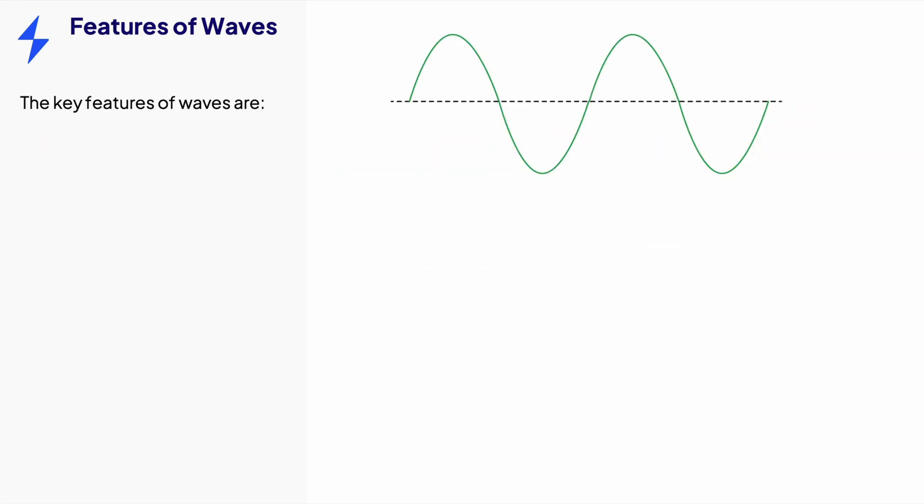The key features of a wave are best shown on a transverse wave. The equilibrium position where there are no vibrations of the wave. The crest or peak, the highest point above the equilibrium. The trough, the lowest point below equilibrium.